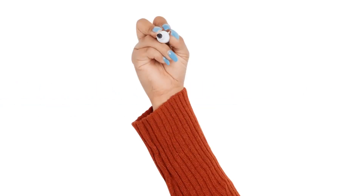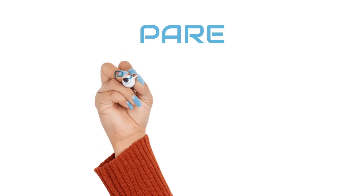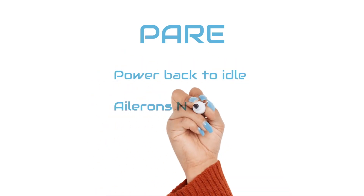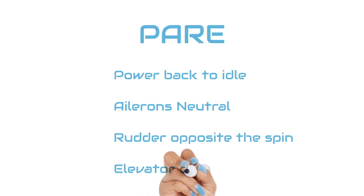So how do we recover from a spin? We use a technique called PARE — P-A-R-E. P is for power, throttle to idle. A is for ailerons neutral. R is for rudder opposite the direction of the spin. And E is for elevator down.